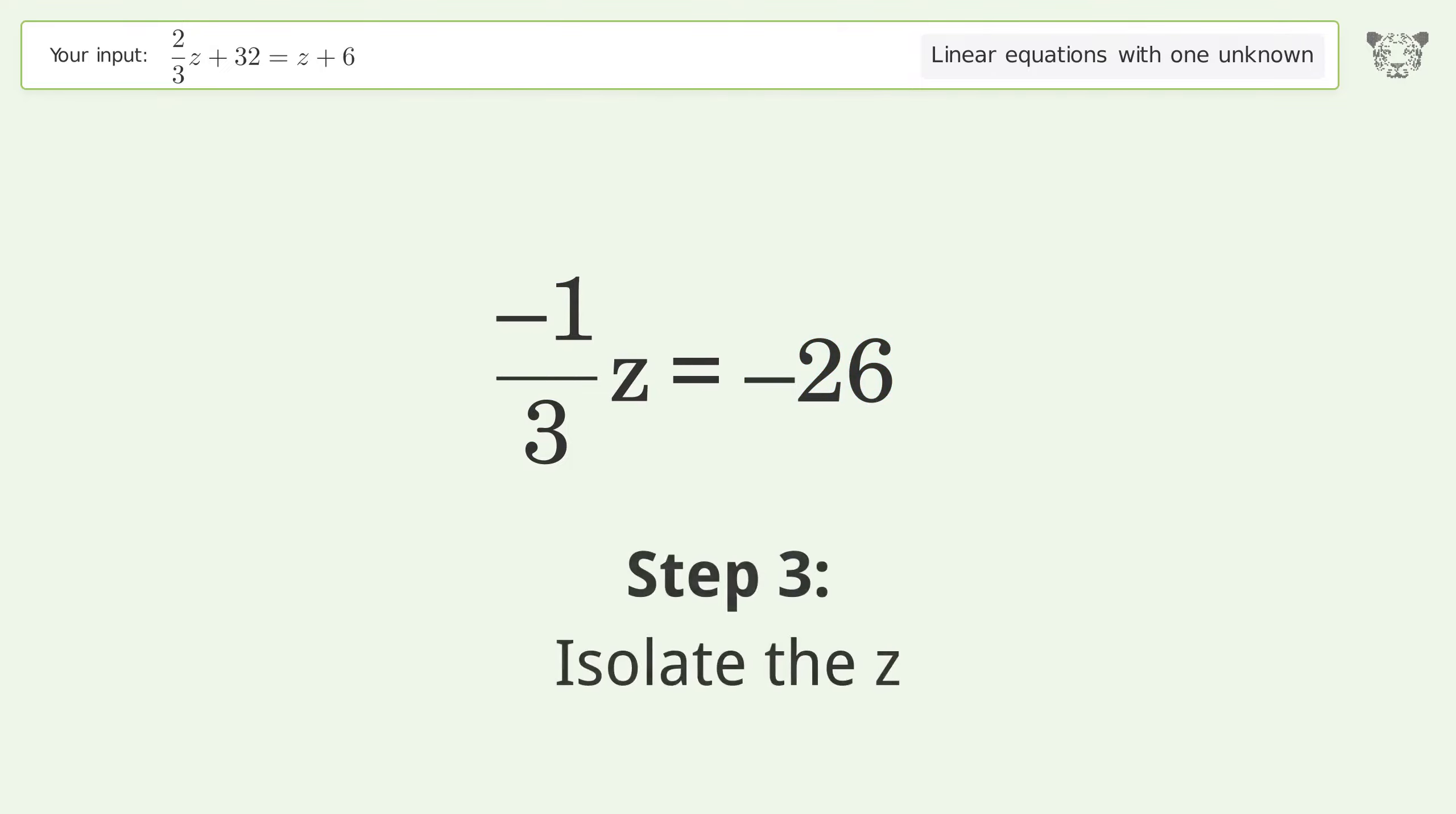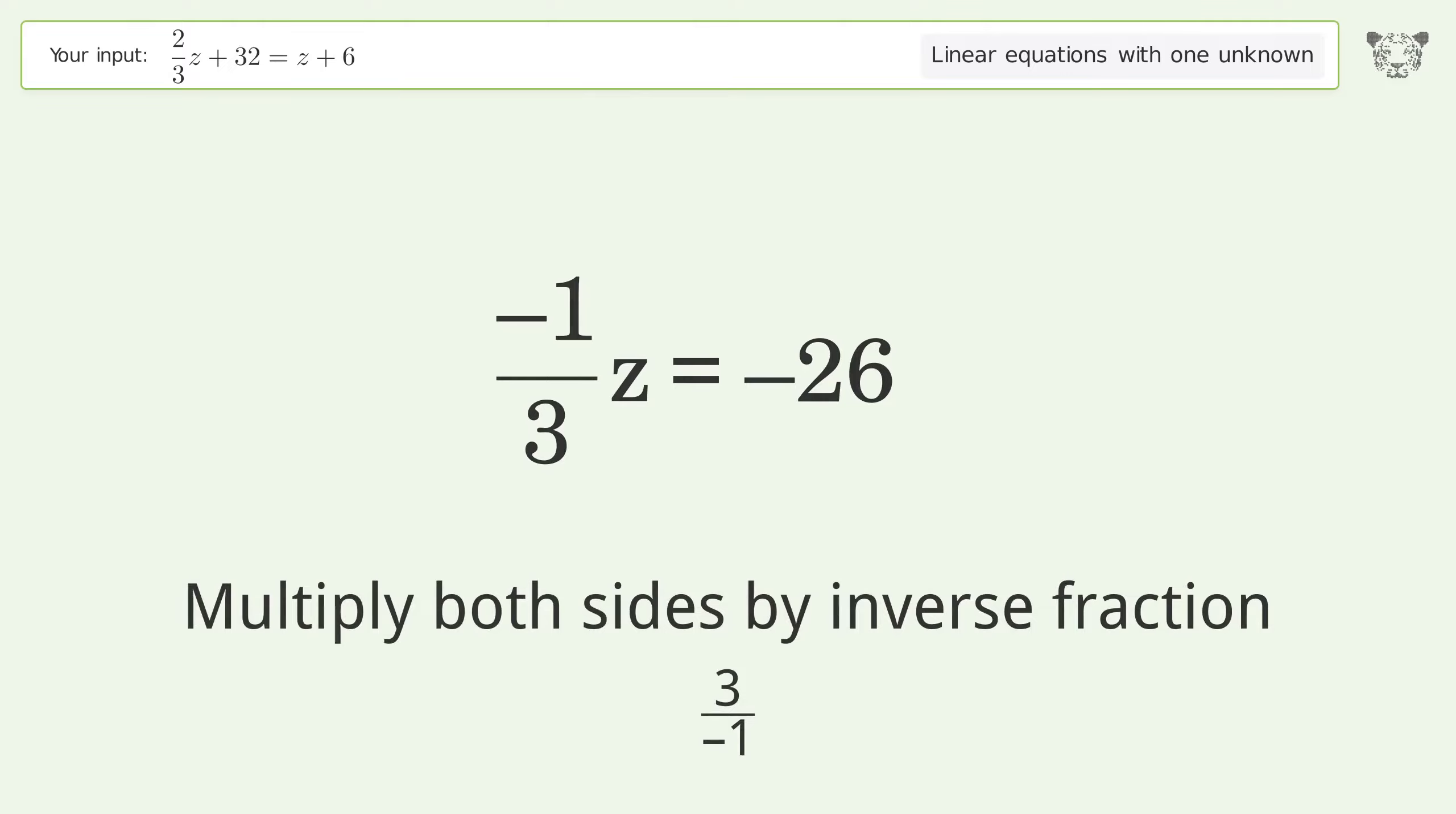Isolate the z. Multiply both sides by inverse fraction 3 over negative 1.